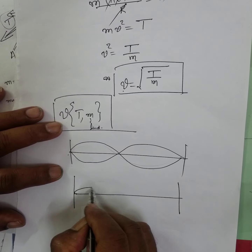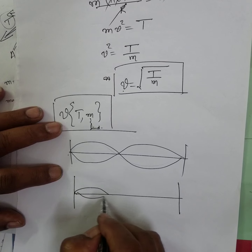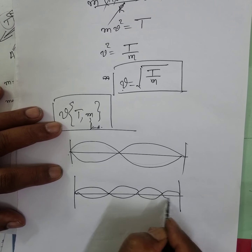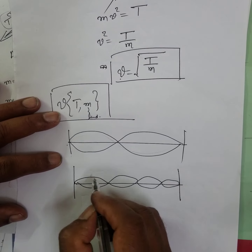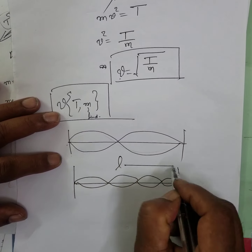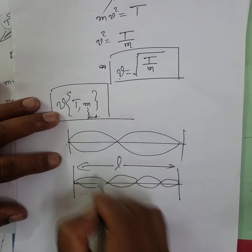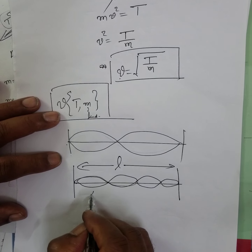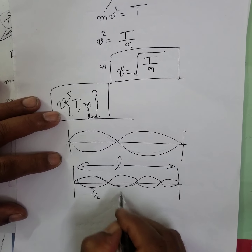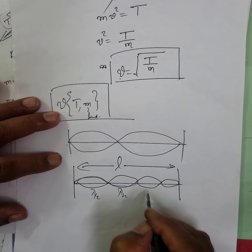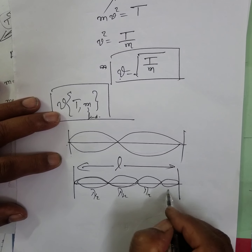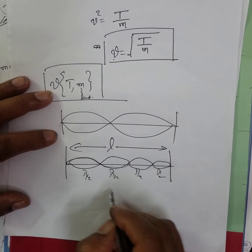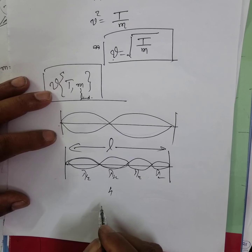The velocity of the wave along the string depends upon two factors: the tension in the string, and the mass per unit length (linear density) of the string.